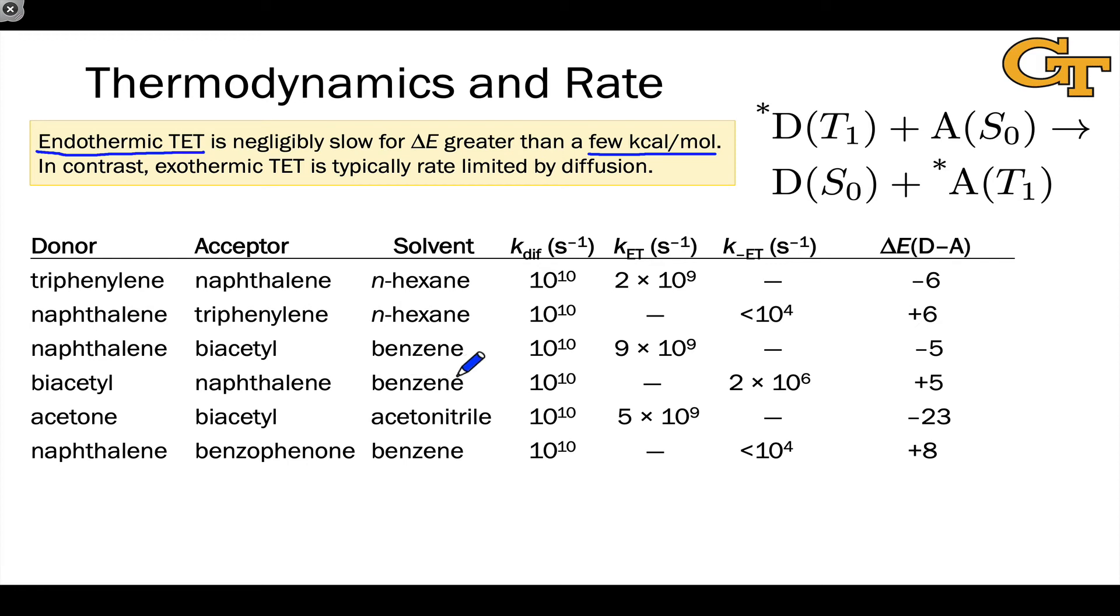On the other hand, when you move to the exothermic regime, energy transfer gets extremely fast, to the point where it's often rate limited by diffusion, in the sense that every diffusional encounter between D star and A leads to an energy transfer event.